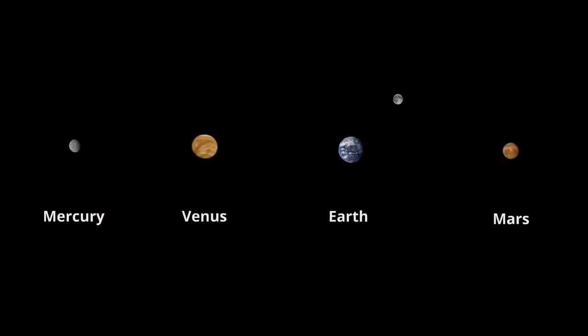Neither Mercury nor Venus have a moon. Mars, interestingly, has two moons named Deimos and Phobos. The Martian moons, however, are too small to be seen from this distance.